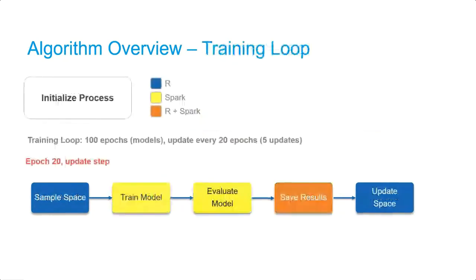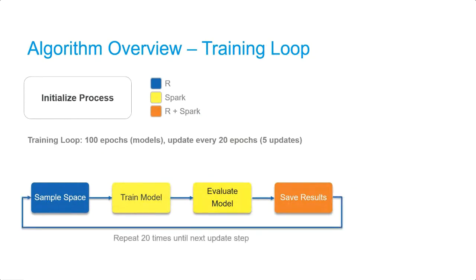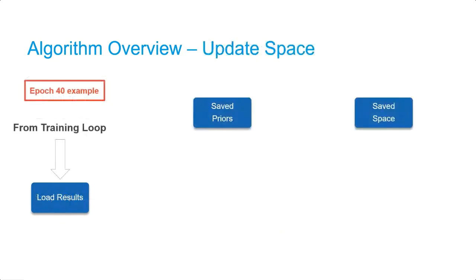Here's a reminder of where we were in our training loop. We'll perform 20 more training steps after this before we re-enter the update step. The final piece of our algorithm can be illustrated with the second update step, done at Epoch 40.